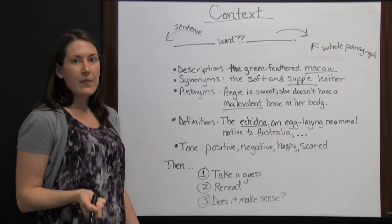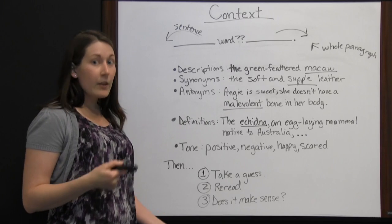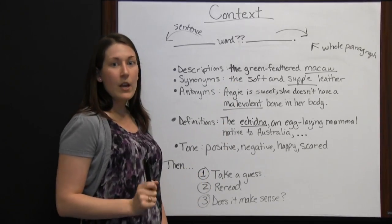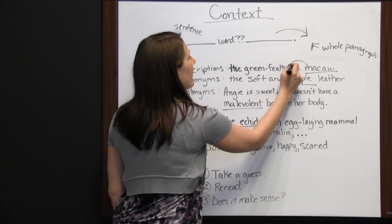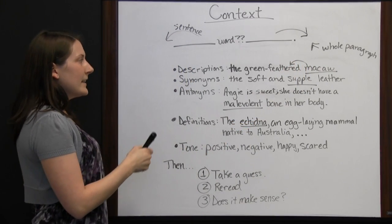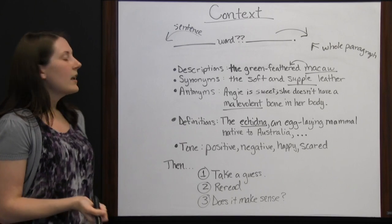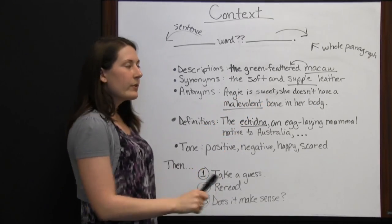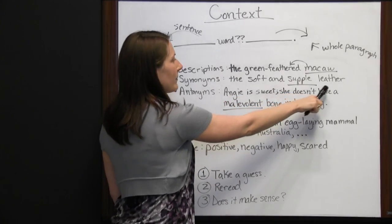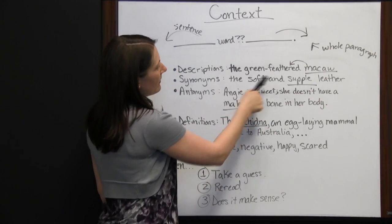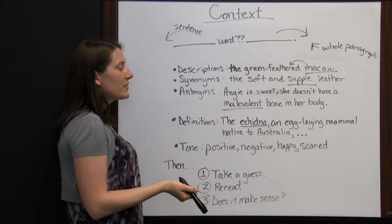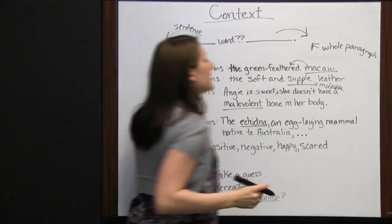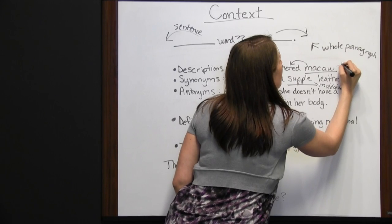One thing you can look at is a description. Sometimes a sentence following or before the unfamiliar word will give you a description. For instance, 'the green feathered macaw.' Well, you may not know the word macaw, but by saying 'green feathered,' you can infer that it is some kind of a bird with green feathers.